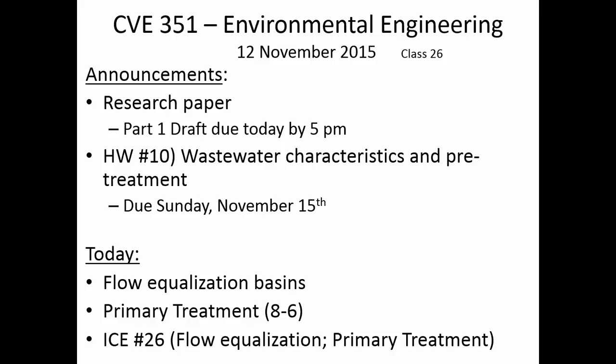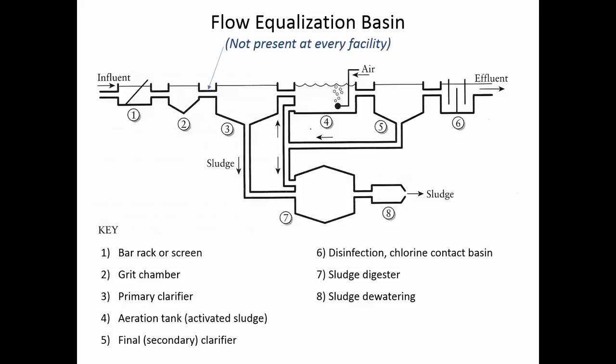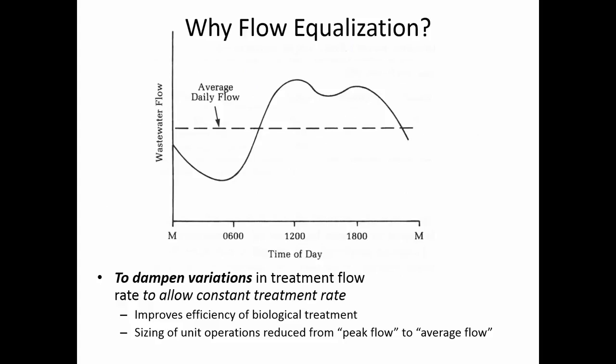After we do flow equalization basins, we're going to talk a little bit about primary treatment. Flow equalization basins aren't at every treatment plant. They're usually put into place when there's a huge variation in the flow rates between the daytime and the nighttime. Flow equalization basins are meant to smooth out the BOD loading and the flow loading because the bacteria are going to require steady state conditions. We want to dampen the variations.